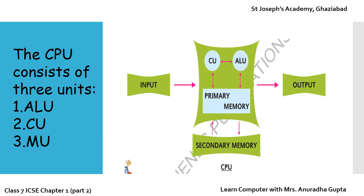The CPU receives data through input devices, processes that data, and produces information on output devices. The CPU consists of three units: ALU, CU, and MU.